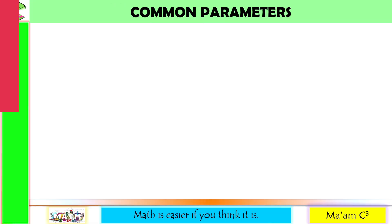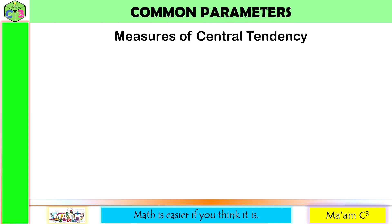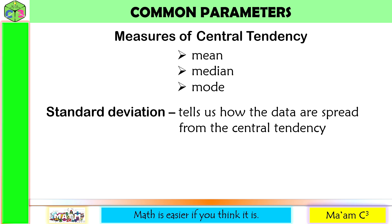Here are the most common parameters that we use in hypothesis testing. We have the measures of central tendency. These are the mean, the median, and the mode. We also have the standard deviation. It tells us how the data are spread from the central tendency. And if we have normal distribution, we have the mean and standard deviation.